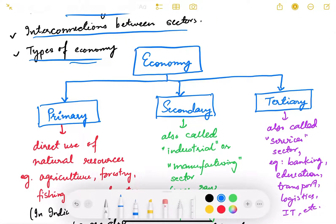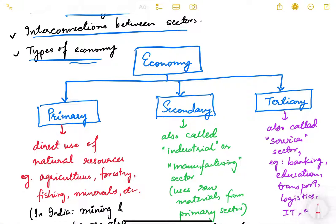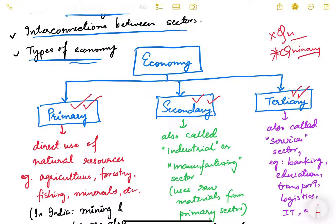The economy is basically divided into three sectors: the primary sector, the secondary sector, and the tertiary sector. There are other sectors also — quaternary and quinary sectors — but we are not going to look into those as they are not very useful for our purposes. We will study these three sectors only, because they cover almost 99 percent of the economy.